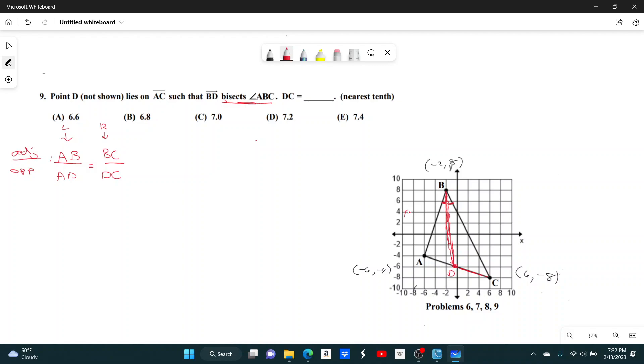Okay. So AB was 12.649. AC was 16. 12.649, that's not a 12, that's a 16. 12.649. And BC was like 17.889.